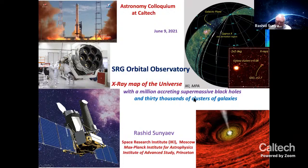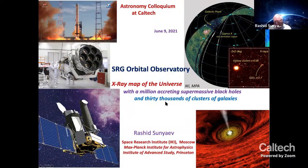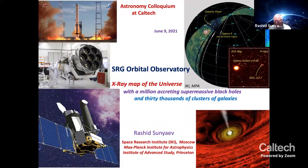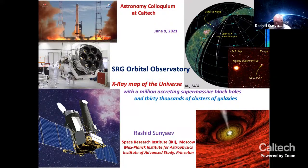Our goal was to detect 3 million accreting supermassive black holes. I have no doubt that we have now more than half of this value. We plan to detect 100,000 clusters of galaxies, and it seems that we are close to half of this value now, after one and a half years of scanning the sky.